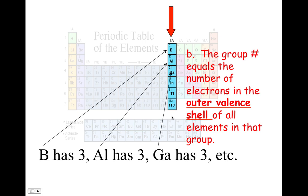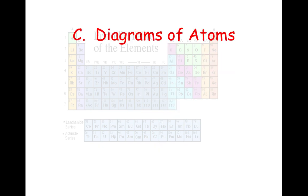The coolest thing about the group number is that it tells us the number of electrons in the outer valence shell of all elements in that group. The period number equals the number of shells, but the number of the group tells us how many electrons are in that outermost shell. Make sure to get all these notes down because we're going to be coming back to this in a little bit. If you look at boron, aluminum, and gallium, they all have three electrons in their outermost valence shell.